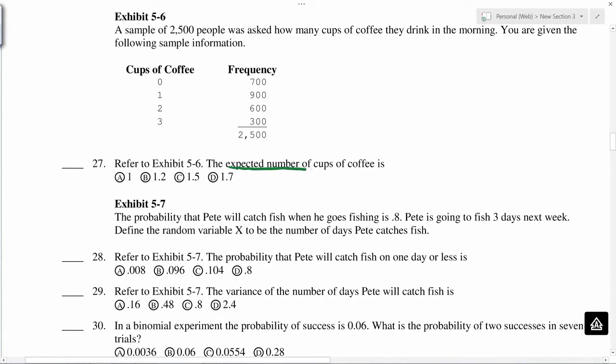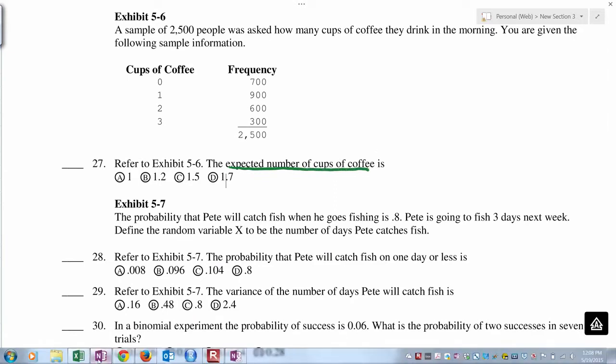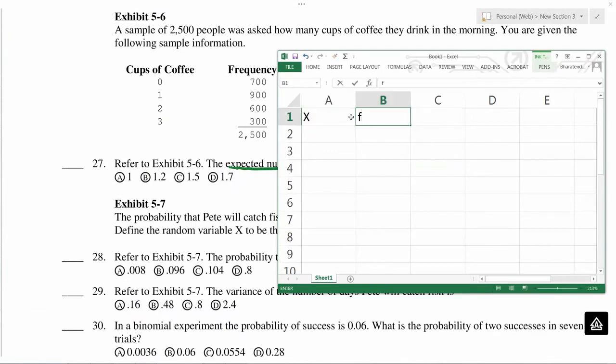So expected number of cups of coffee, let's do this in Excel. So this total is 2500. We can calculate p values, this divided by 2500, and then I can drag this.